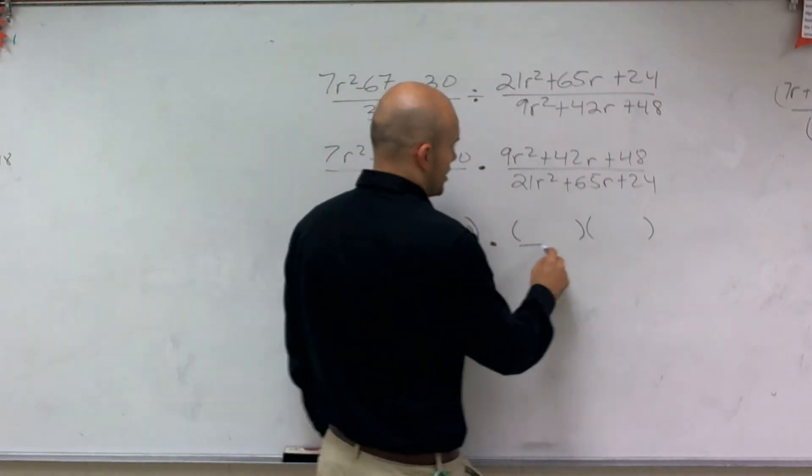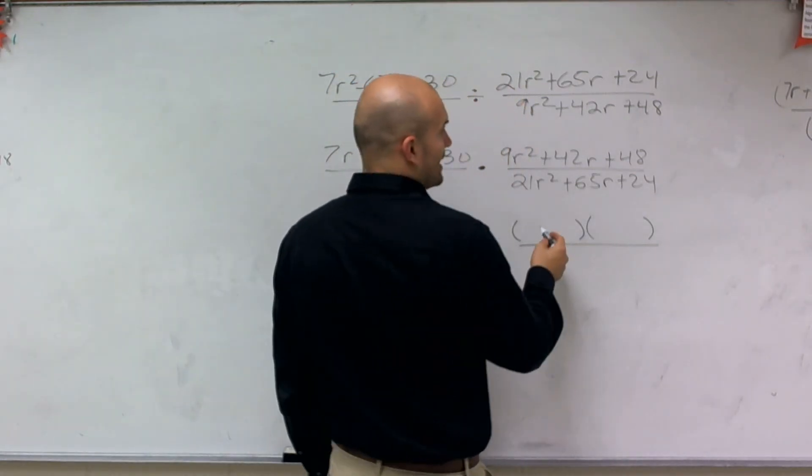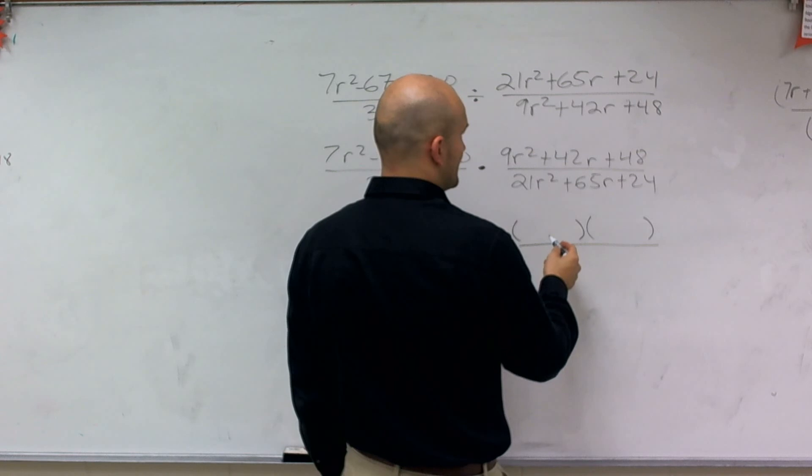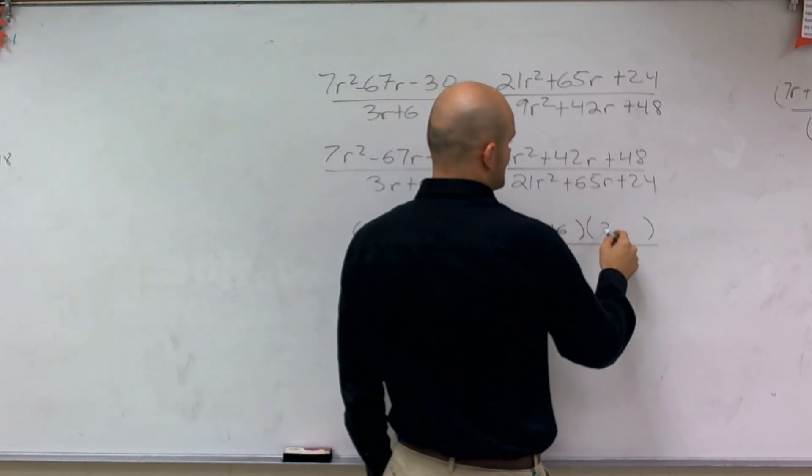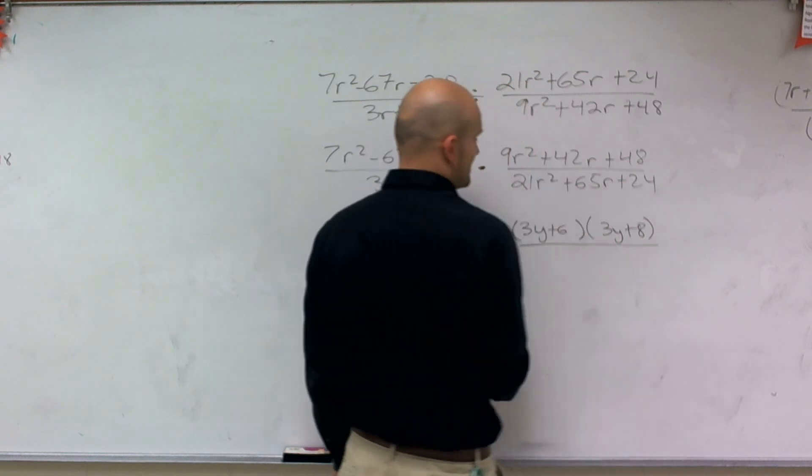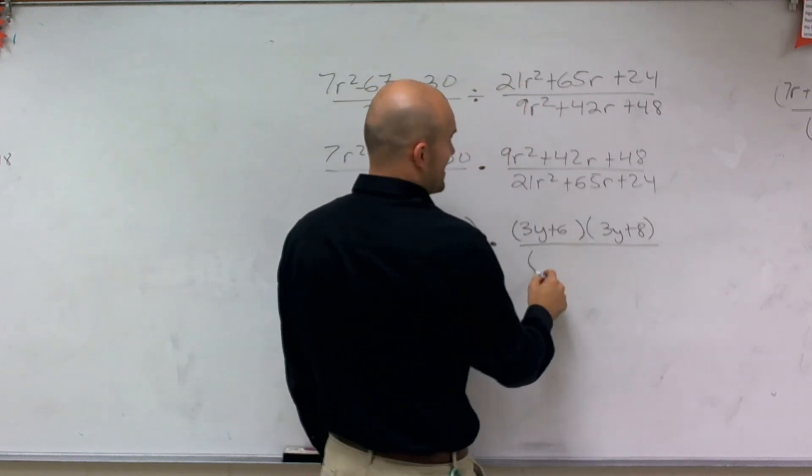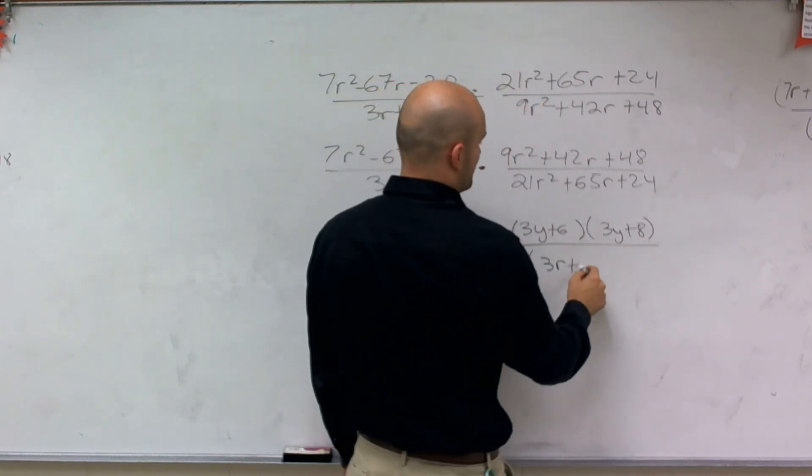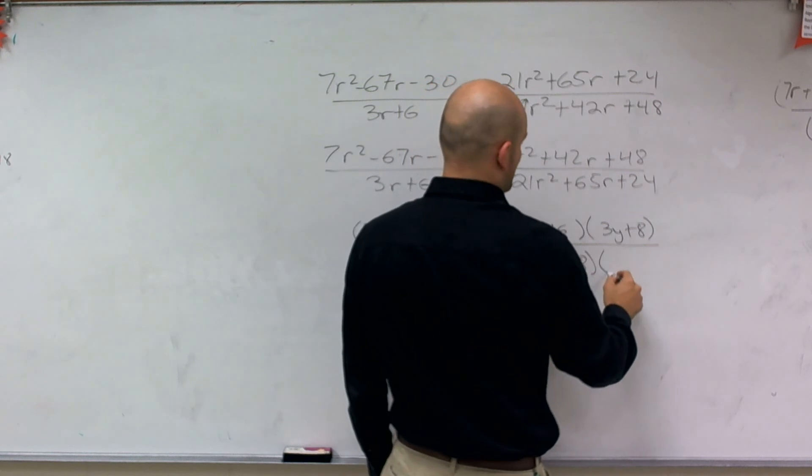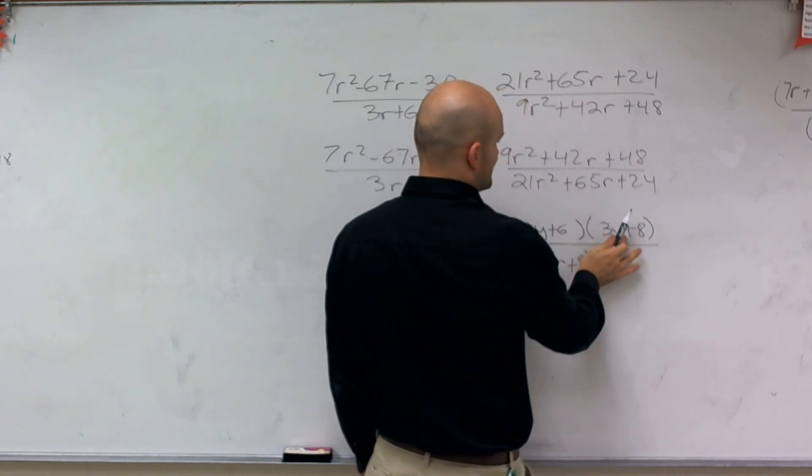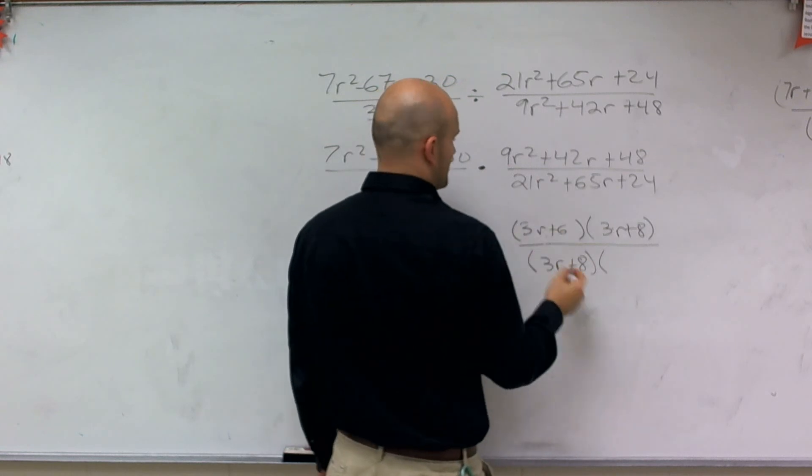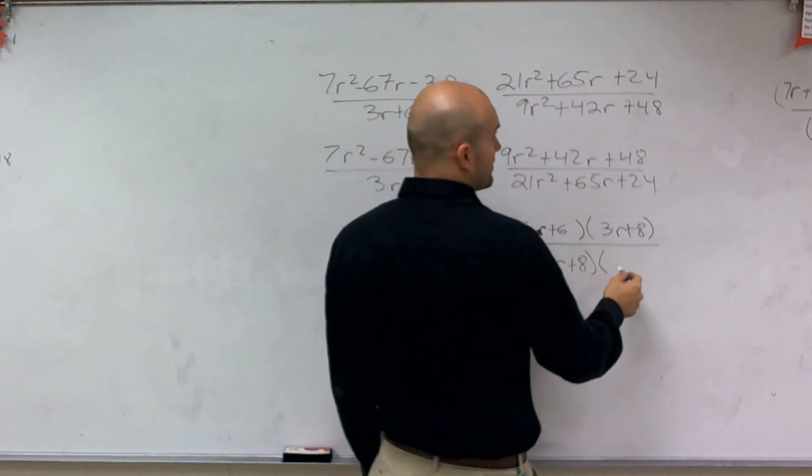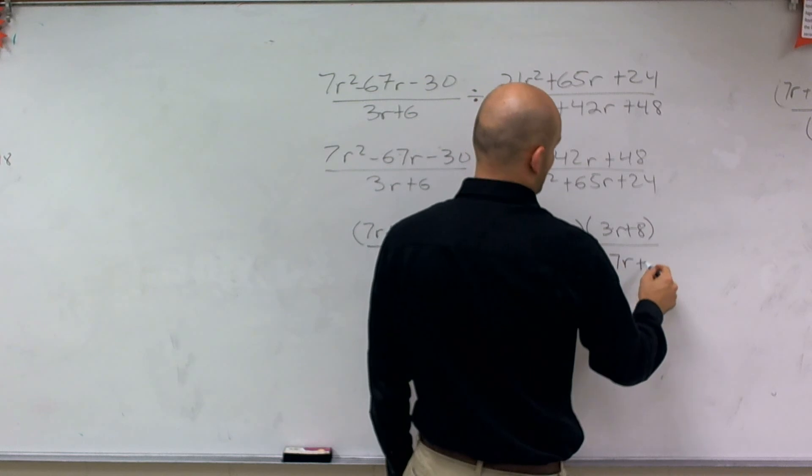So when factoring out my numerator, I ended up getting 3r plus 6 times 3r plus 8. And then on the denominator, by factoring this out, I get 3r plus 8 times, that's not a y, that's an r, and that's an r. I don't know where my y's are coming from. And then 3r plus 8 times 7r plus 3.